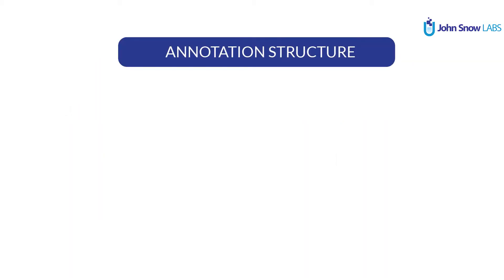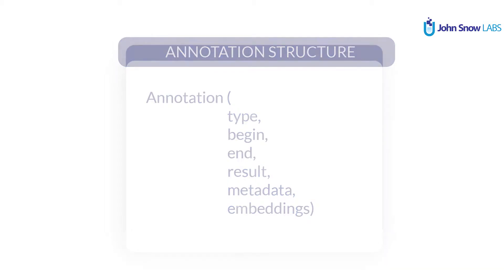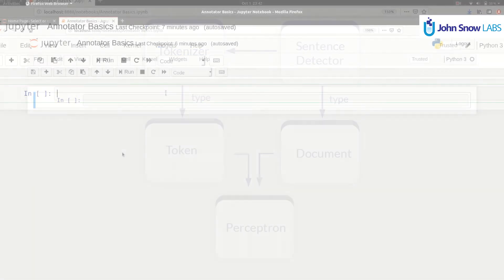Something very important to know is the structure of an annotation. The annotation is the output of every annotator. Annotations contain: type, begin, end, result, metadata, and embeddings. Begin and end refer to where the annotation begins and ends relative to the original text. Result is usually the main outcome. Metadata has other information about the annotation. Embeddings is mostly used by word embeddings annotators. For example, if we have a tokenizer, it outputs type token, and a sentence detector outputs type document. To use a perceptron model, we need to use as input columns the output column names of those previous annotations.